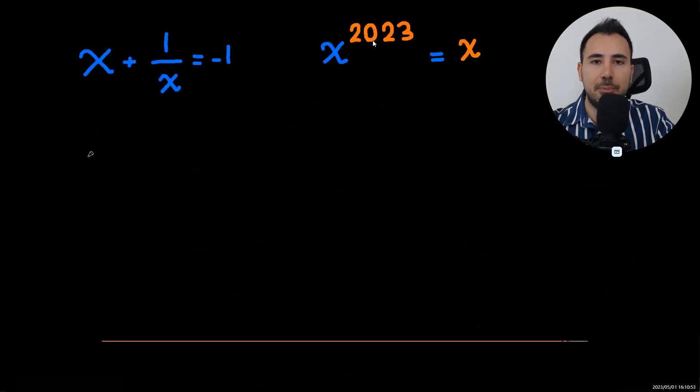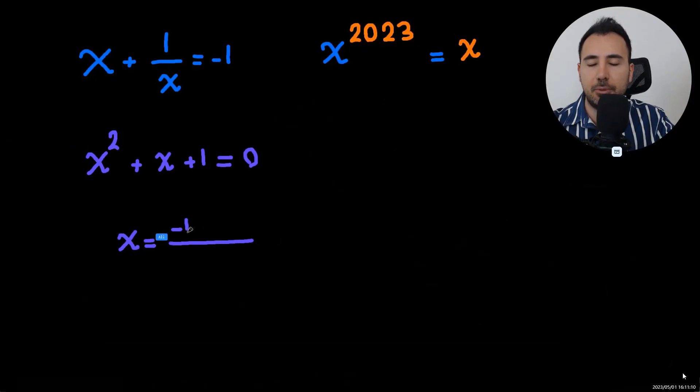So all of this x to the power of 2023 is the same as x. So we just have to find the value of x. Let's go and do this. We had the formula, right? We had this equation. We just have to solve it. Quadratic formula.